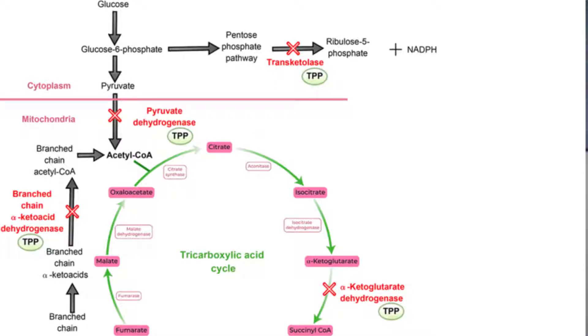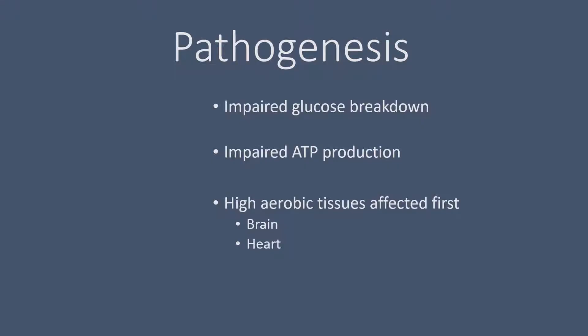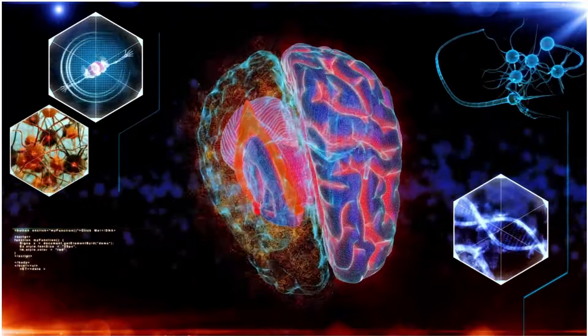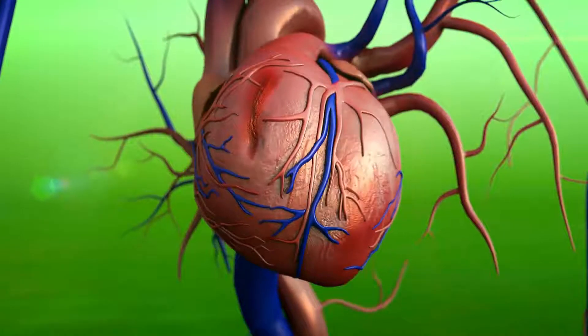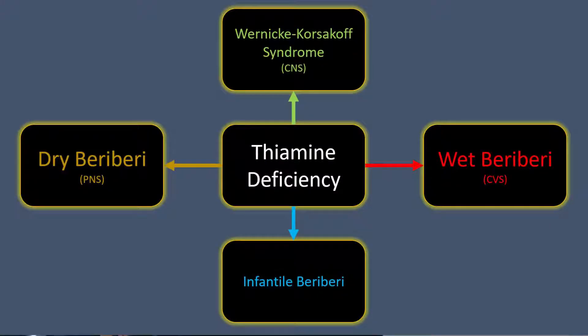It should come as no surprise that a deficiency in thiamine will disrupt your metabolism. It will hinder glucose metabolism, reducing the amount of ATP you make. Naturally, your highly aerobic organs that require a lot of ATP — such as your brain and heart — will be affected first. There are four conditions that can result from thiamine deficiency.